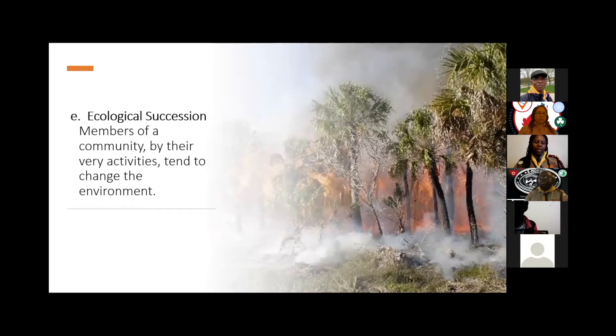Ecological succession: members of the community by their very activities tend to change the environment. After a period of time they make the habitat unfit for themselves. The organisms then die out or migrate elsewhere, but they have made the environment fit for other kinds of plants and animals. A different kind of community develops in place of the old one. This kind of gradual but continuous change is called ecological succession. For example, in the Australian outback where forest fires regularly destroy forested areas, after only a few days small plants take advantage of the absence of the forest to grow. Further time passes and they are replaced by shrubs, which are eventually joined by regrown or new trees to restore the community to its original state.